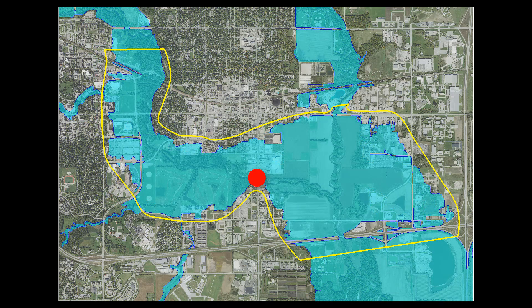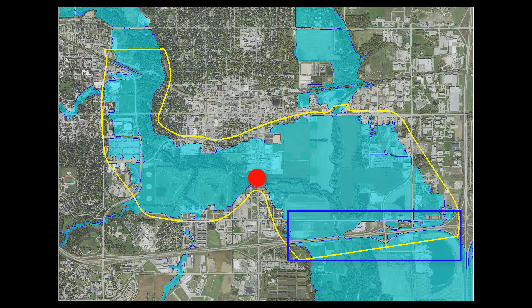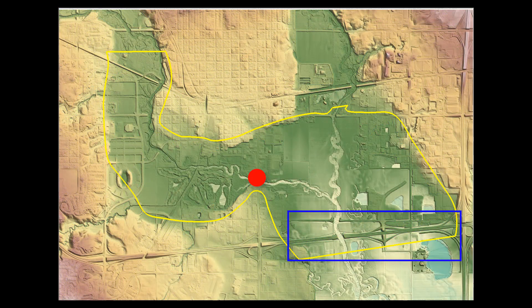Similar to the upstream limits, the downstream model limits should be located far enough downstream so that assumptions in the water surface boundary do not impact the location of interest. A general rule of thumb is two floodplain widths downstream from the area of interest. Ideal downstream limits are the most constricted location within the reach. A common downstream boundary condition is normal depth, which is most applicable to constricted, uniform flow, not wide floodplains.